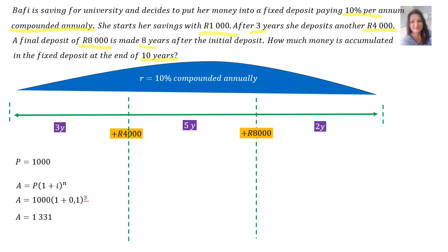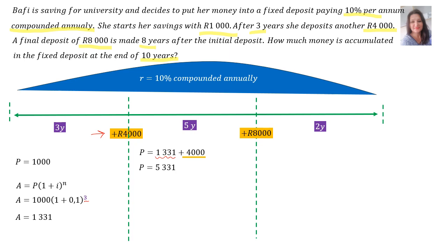Then the 4,000 rand was deposited. For the second part of our timeline, the new P combines the answer from the previous sum — 1,331 — plus the 4,000 rand deposited, therefore P = 5,331 rand. Using A = P(1 + i)^n, with P = 5,331, i = 0.1, and a time of 5 years, slotting that into the calculator gives A = 8,585 rand and 63 cents.